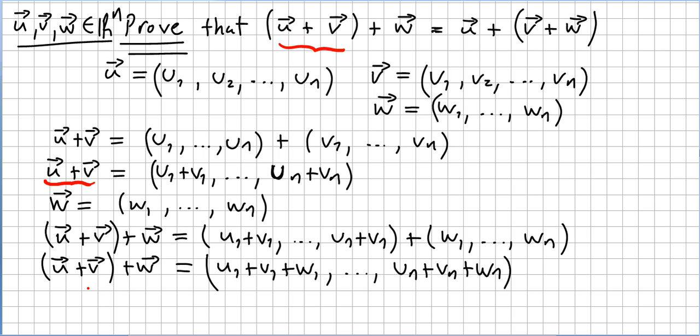So adding this one first and then w, we get u1 plus v1 plus w1, u2 plus v2 plus w2, etc., till un plus vn plus wn. That's what this is.